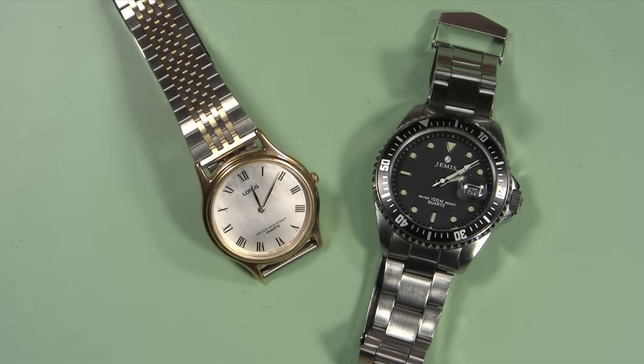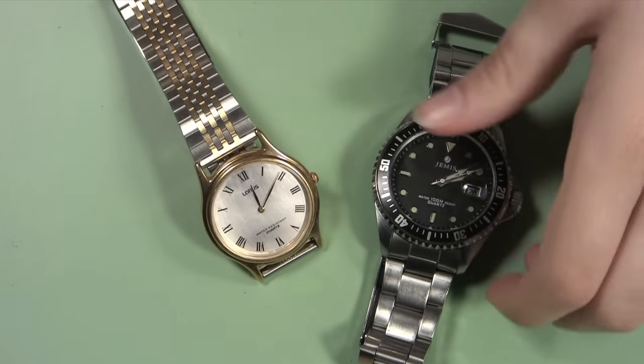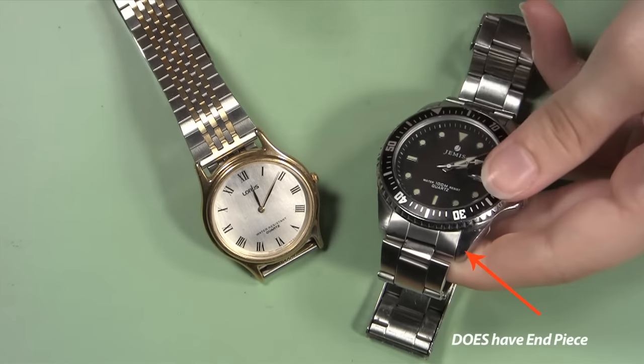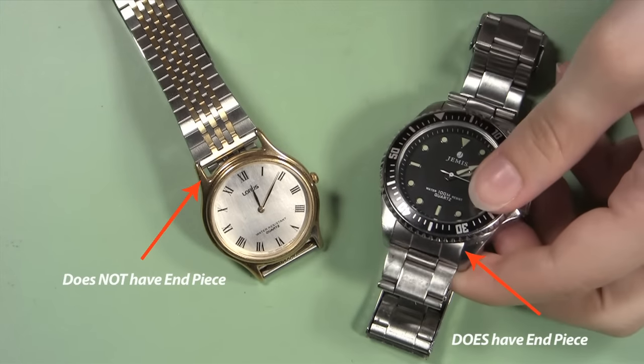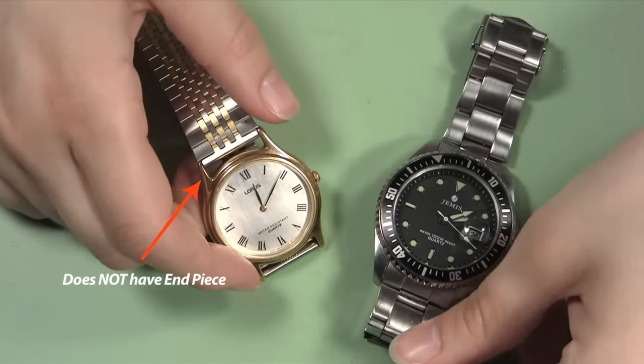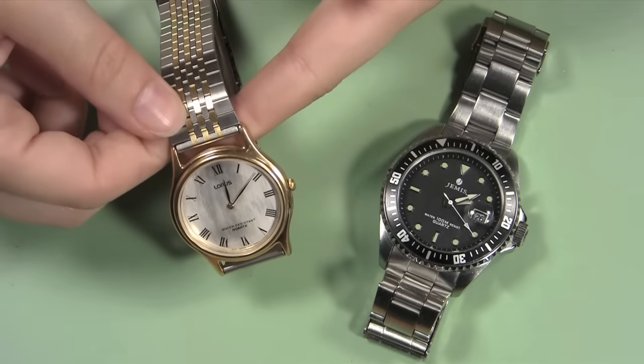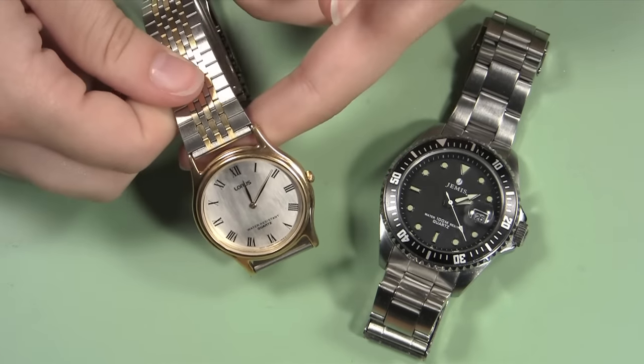How do you know if your watch case has end pieces? Check the space between the watch lugs, the metal part that sticks out to hold the watch band, where the band meets the watch case. If it looks like the band smoothly flows into the watch case without any gaps, you are most likely dealing with an end piece.